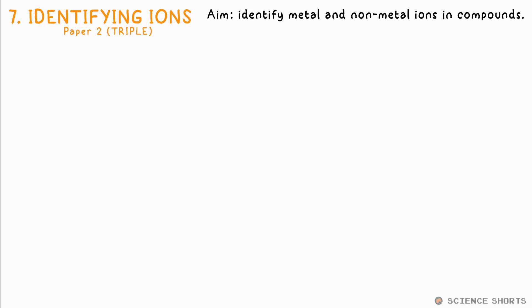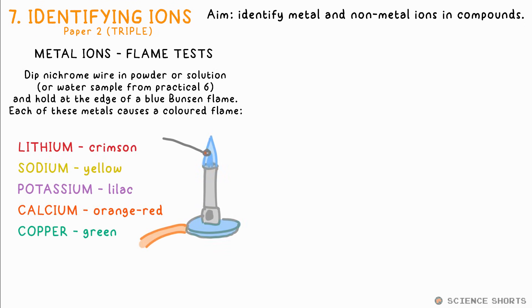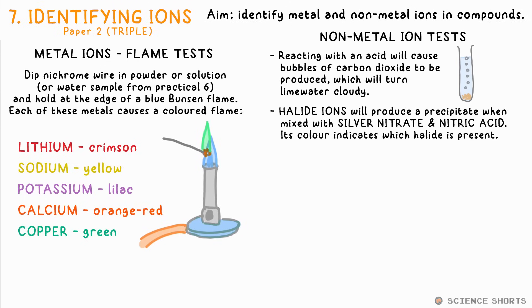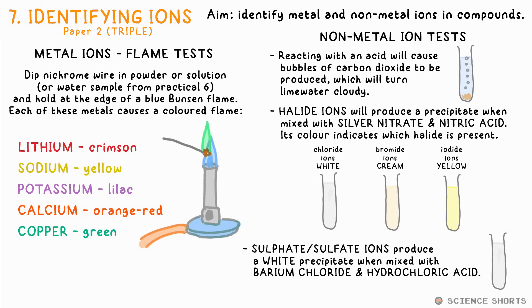Chemistry 7: Identifying Ions. We need to be able to identify various metal and non-metal ions found in compounds. These five metals can be identified using a flame test — we dip a piece of nichrome wire in a solution or powder of the compound and place it at the edge of a Bunsen flame. To test for carbonate ions, add hydrochloric acid; if bubbles are made, collect the gas and put it in lime water — if it turns cloudy, it's carbon dioxide, showing carbonate ions are present. To test for halide ions, add silver nitrate solution and nitric acid: chloride gives a white precipitate, bromide a cream precipitate, and iodide a yellow precipitate. Adding hydrochloric acid and barium chloride results in a white precipitate if sulphate ions are present. If you've done a good job purifying your water from practical 6, you shouldn't see positive tests for sodium or chloride ions.